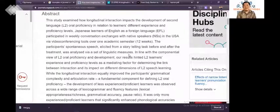Let's look at the abstract. The study examines how longitudinal interaction impacts the development of second language proficiency in relation to learners' different experience and proficiency levels. Japanese learners of English as a foreign language participated in weekly conversation exchanges with native speakers in the USA via video conferencing tools over one academic semester, 12 weeks. So as you see, it takes time. We want to know the development of some things. Of course it needs time. So the type of study must be a longitudinal study.